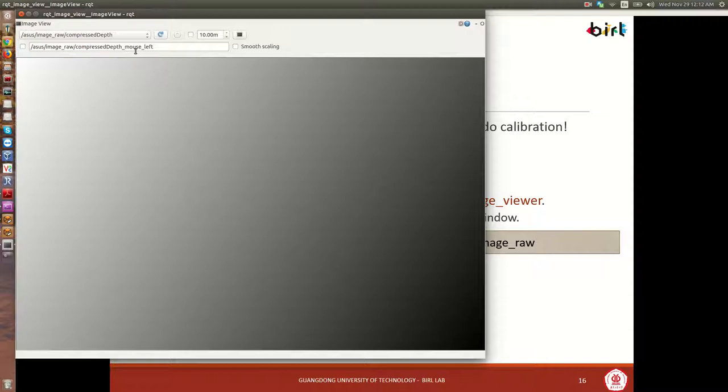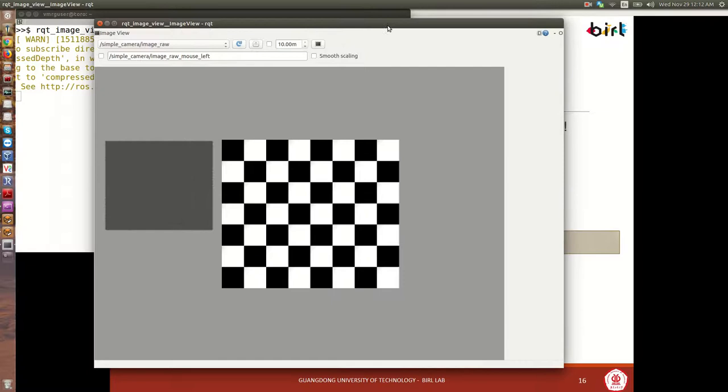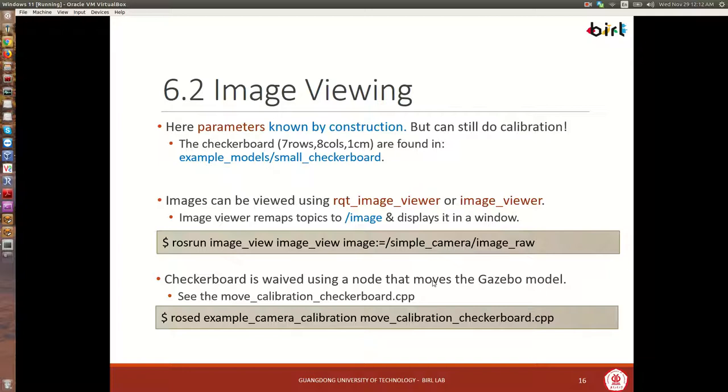Let me open another window here, maximize it, and then run RQT image view. So RQT image view will open this graphical user interface like this, and then give us this menu from which we can select a topic, and then immediately it will show the image for that topic in the graphical user interface. This is another way of visualizing an image in ROS. The next step is, as we discussed earlier, we need to move the checkerboard, or we need to wave it. Now, to do this, we've used a node that is going to interact with Gazebo through services to move the checkerboard.